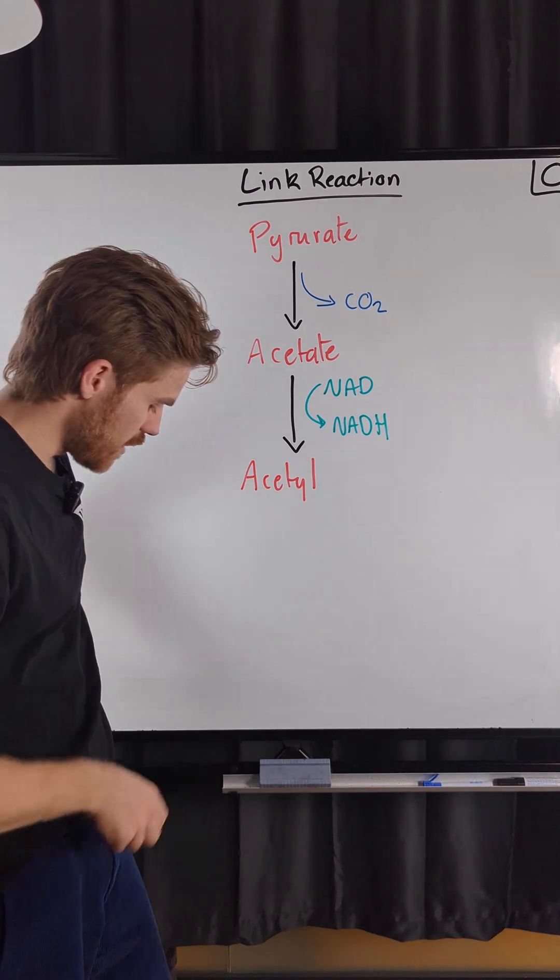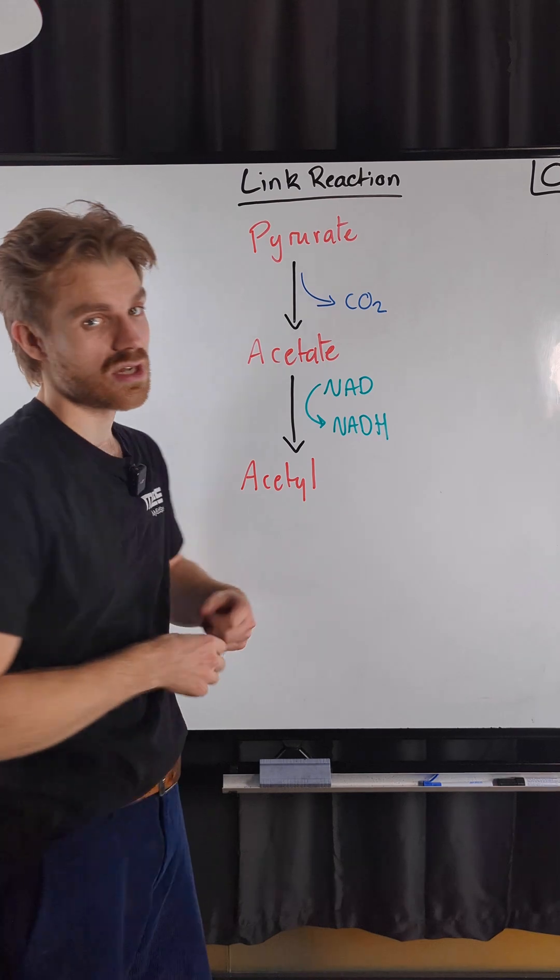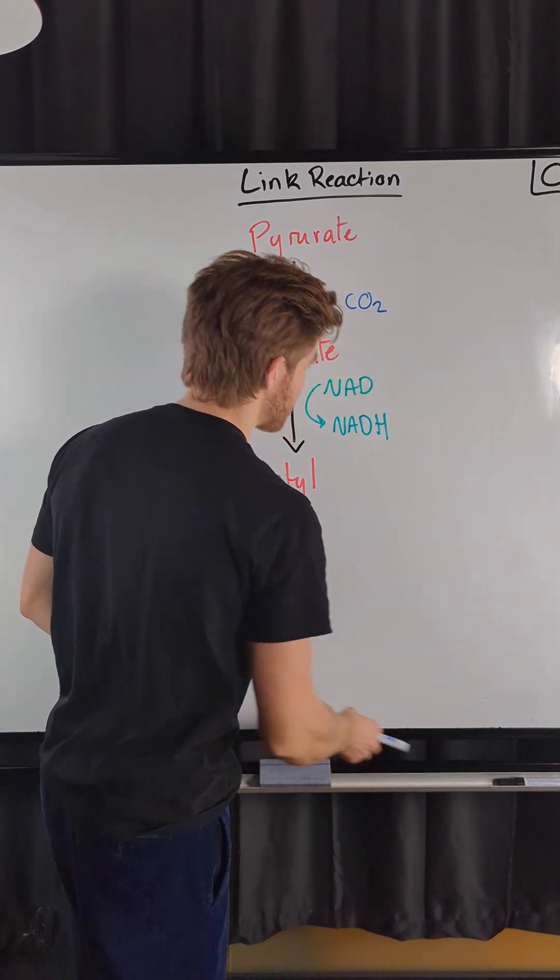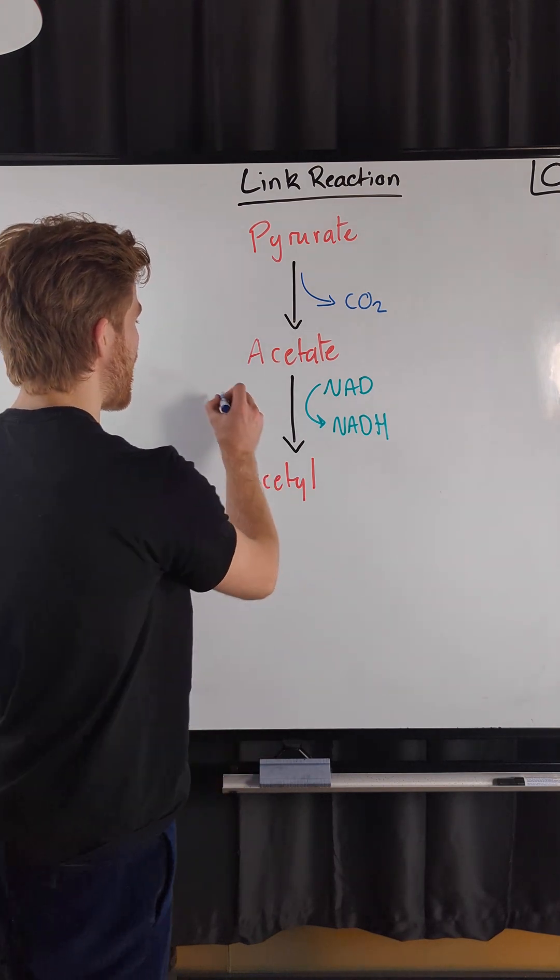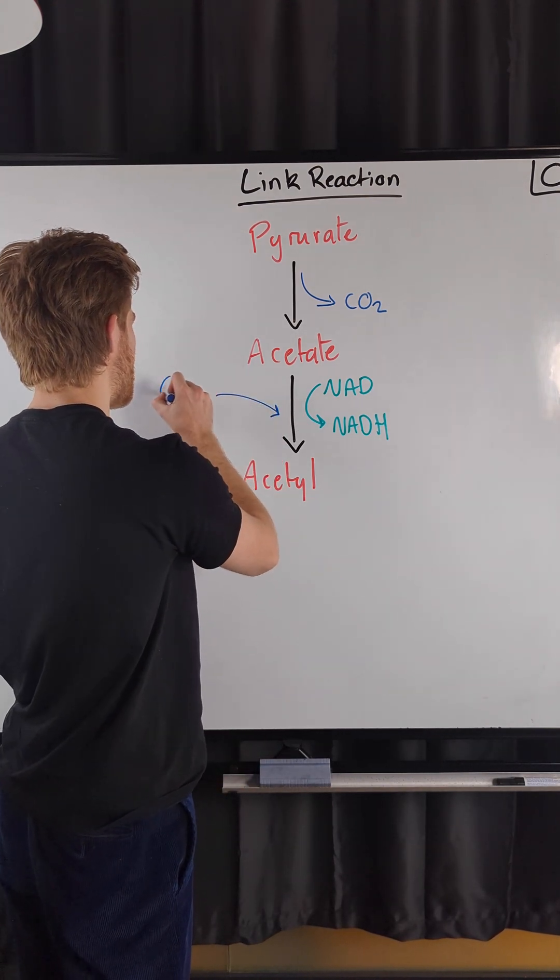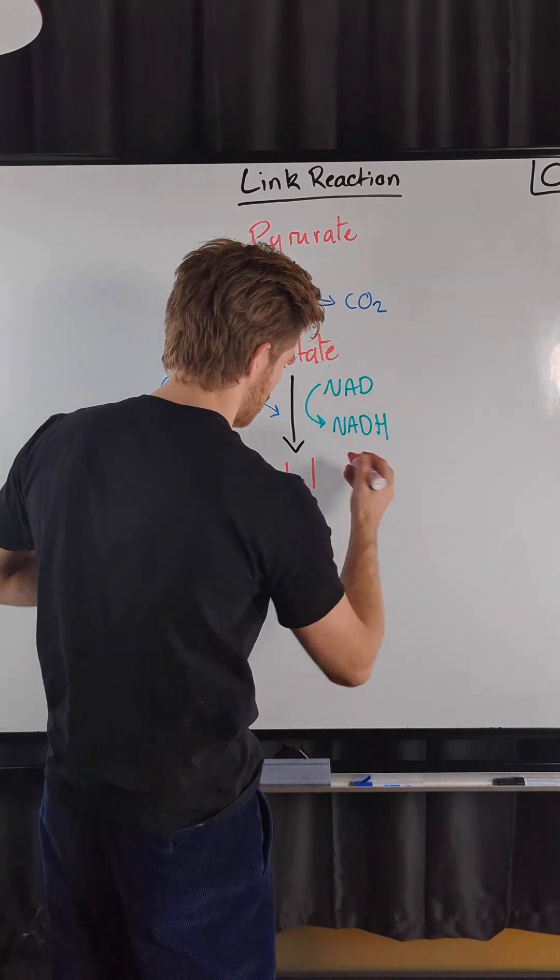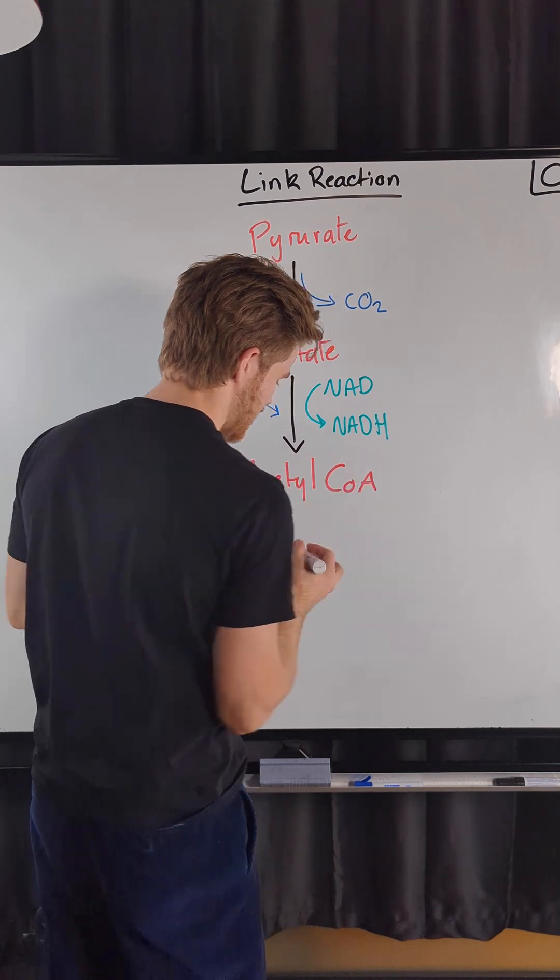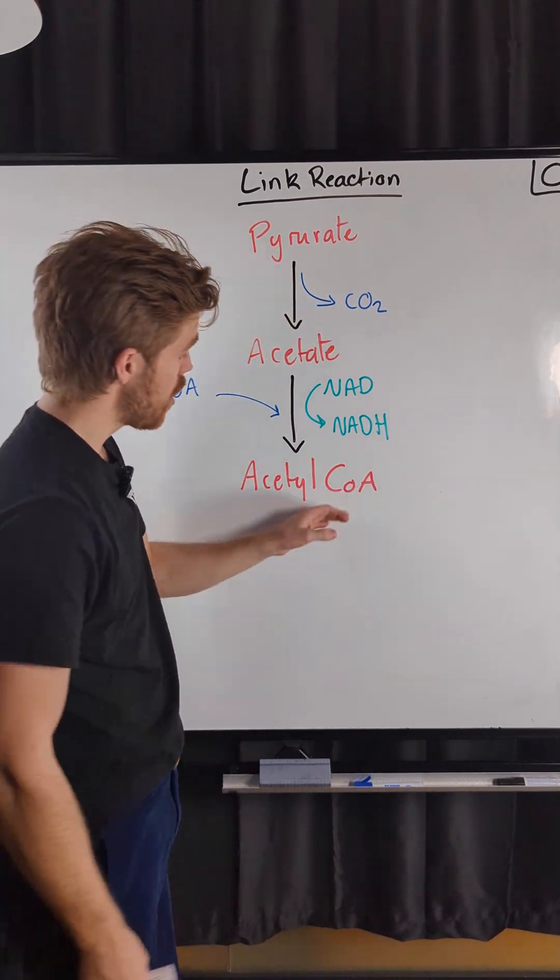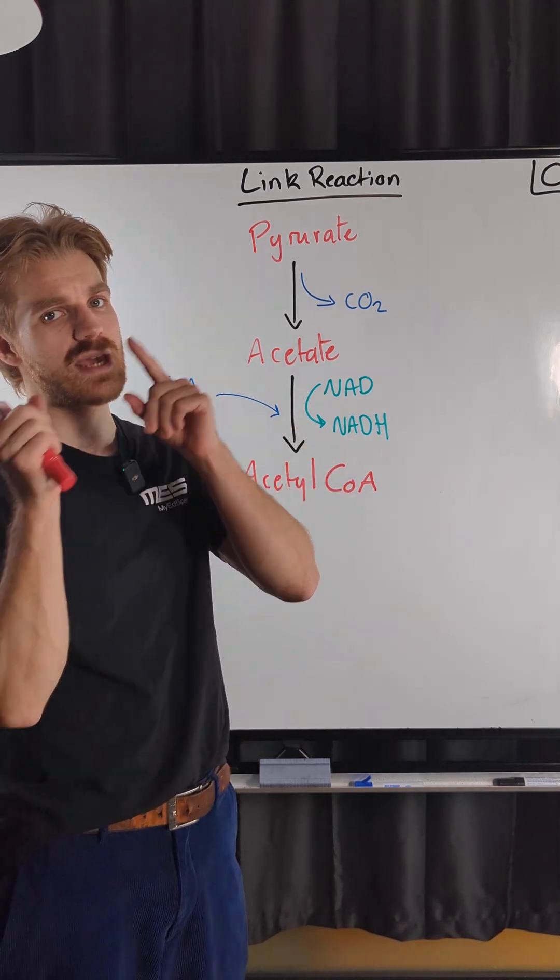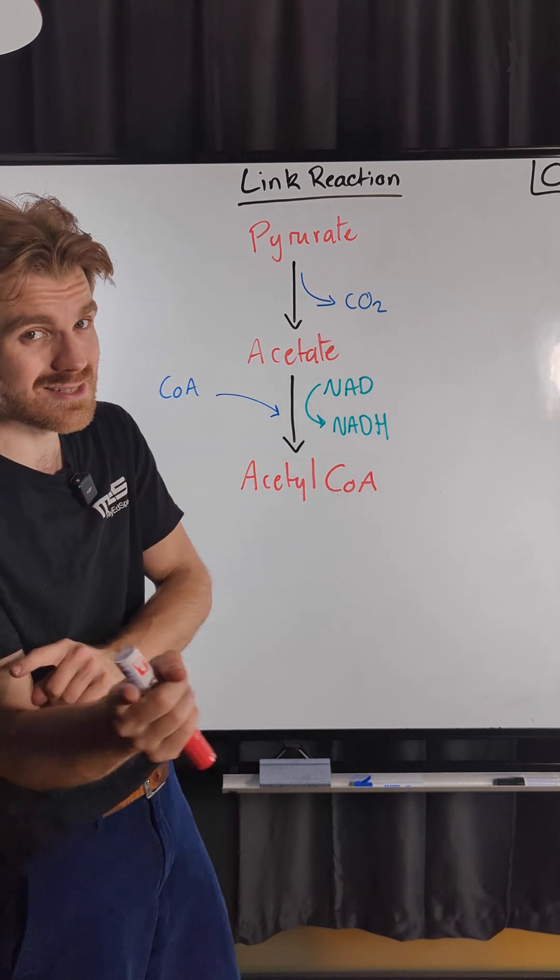And so the final thing here to carry that acetyl group to the Krebs cycle we also need to add in some CoA, some Coenzyme A. So that's why we form our Acetyl CoA there. Now remember the Coenzyme A, it is not an enzyme, it is a coenzyme. Let me know in the comments what's the difference between a coenzyme and a cofactor.